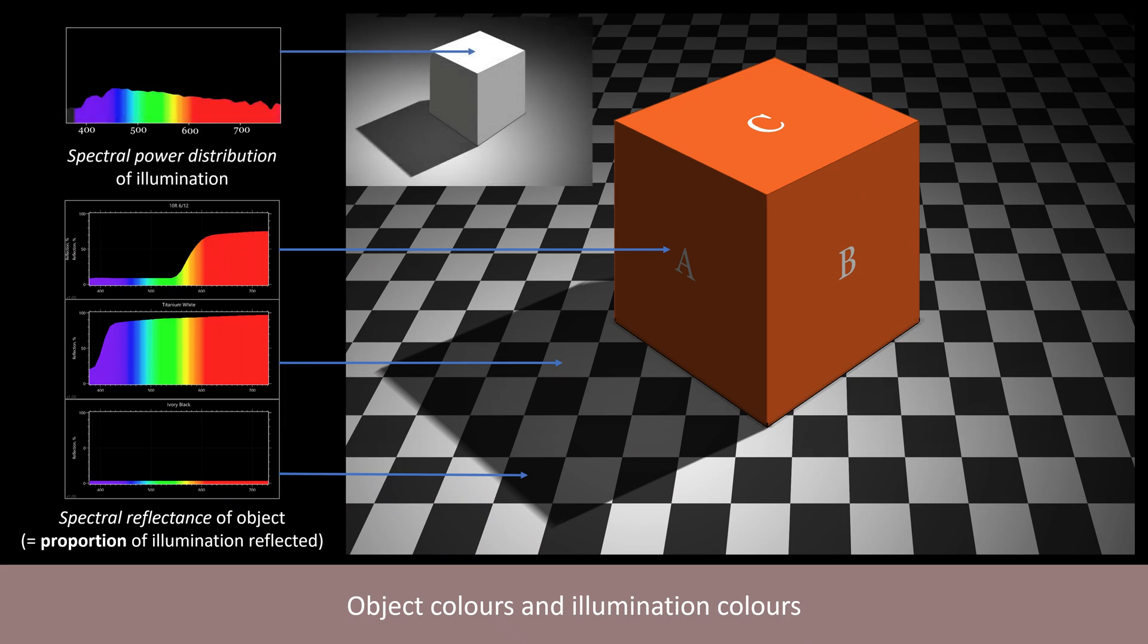We might not notice it, but our perception of the colours of objects is always accompanied by a perception of illumination. This illumination can also vary in colour. But in this image we perceive achromatic or white light illumination varying only in brightness.